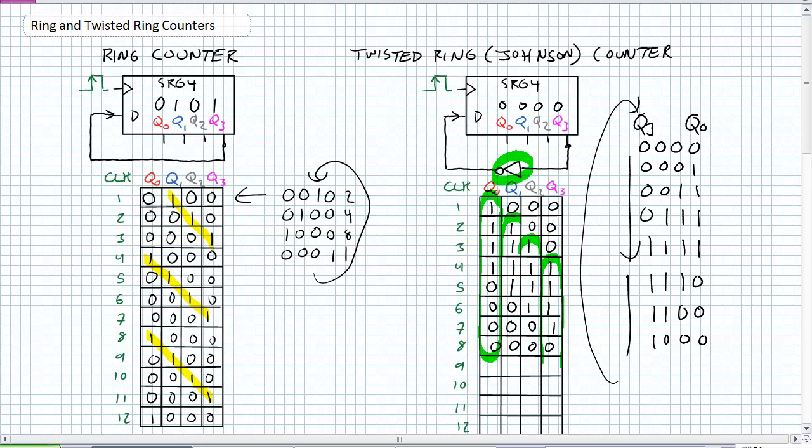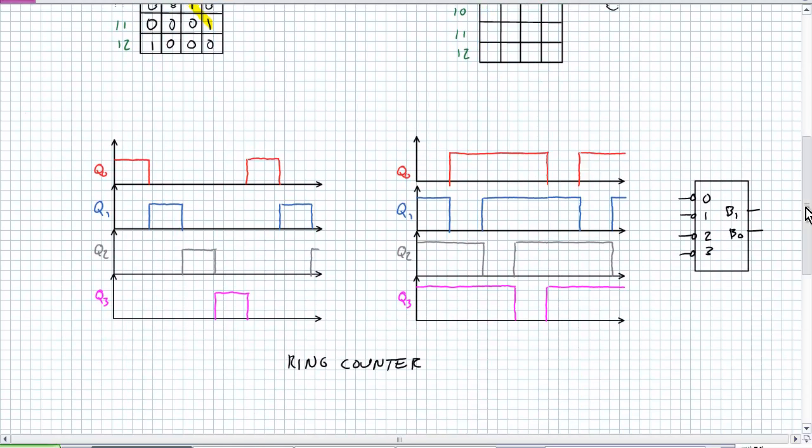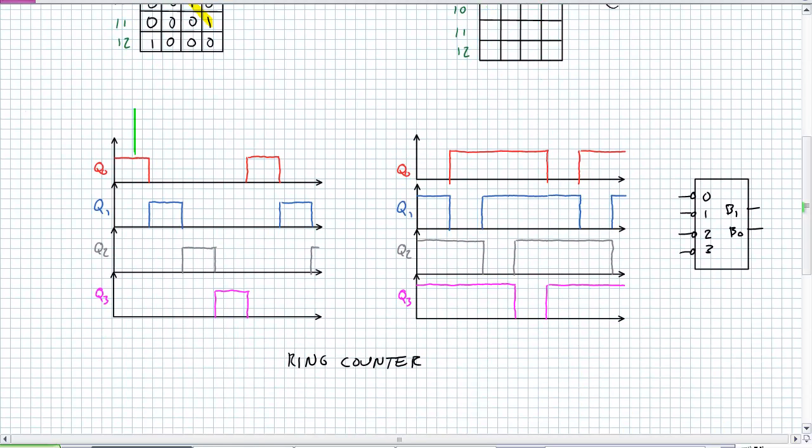So let's look at how these timing diagrams work for a ring counter and a twisted ring counter. The first and easiest one, who's got the one, the ring counter. So it's a very simple game of who's got the one. First clock pulse comes along, Q0's got the one. Second clock pulse comes along, Q1's got it, then Q3, Q2, then Q3, and it's back. That was the initial pattern of zero, zero, zero, one. And we're playing that game, who's got the one all the way through.